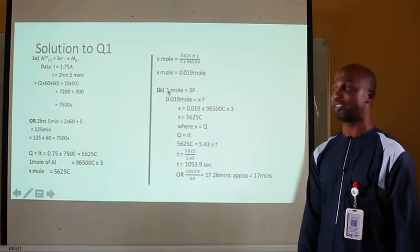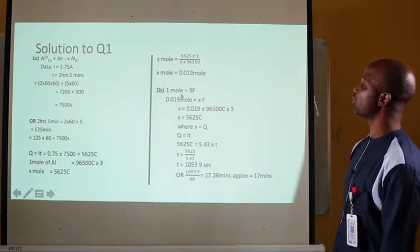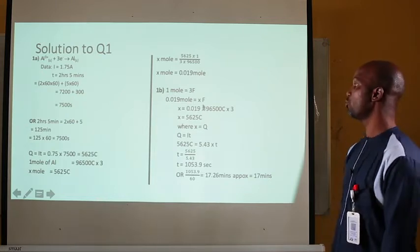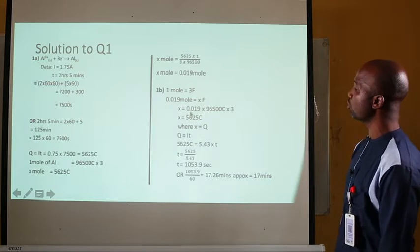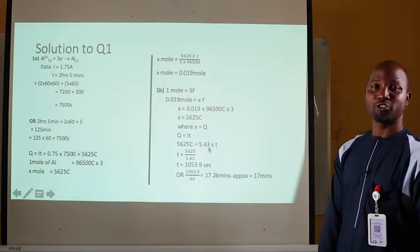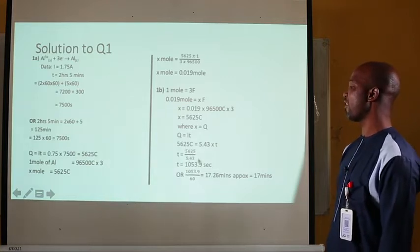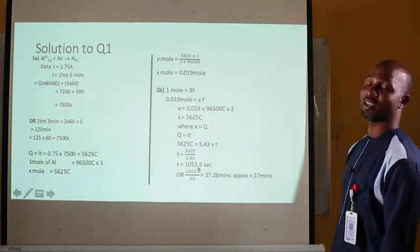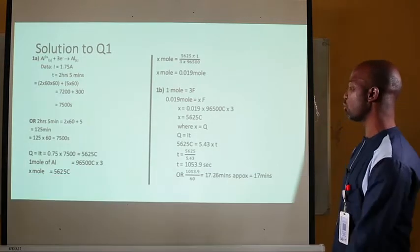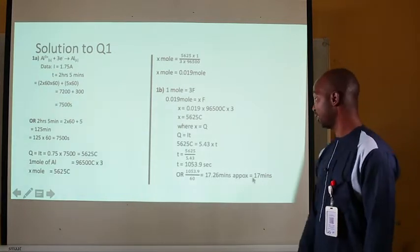For Question 1b, we need to find the time. Given: 1 mole requires 3 Faradays; 0.019 moles will give x Faradays. Solving gives x = 5,625 coulombs. Since Q = It, making t the subject: t = Q/I = 5,625 / 5.43 = 1,035.9 seconds. Converting to minutes by dividing by 60 gives approximately 17.26 minutes, or approximately 17 minutes.